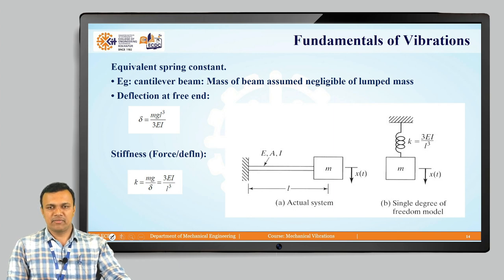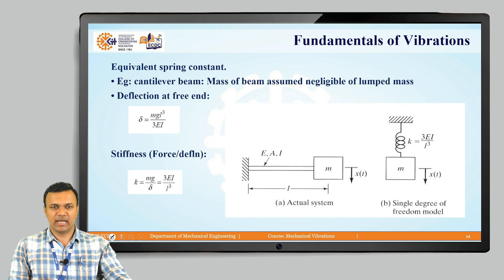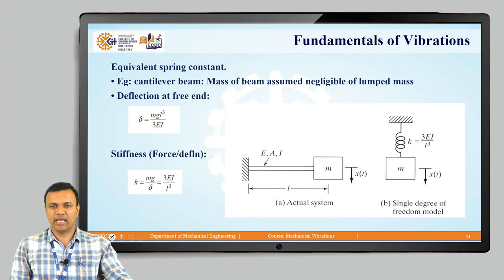If we calculate the deflection for the actual system, it can be given as delta is equal to mgL³ upon 3EI. We can represent the same system with a spring and mass system which is a single degree of freedom system. Stiffness is nothing but force upon deflection. Assuming force is mg and deflection is delta, if we put the value of delta as mgL³ upon 3EI, the stiffness value comes as 3EI upon L³. So we can represent the same actual system with an approximate mathematical model of a spring and mass system wherein the spring has stiffness k equal to 3EI upon L³.